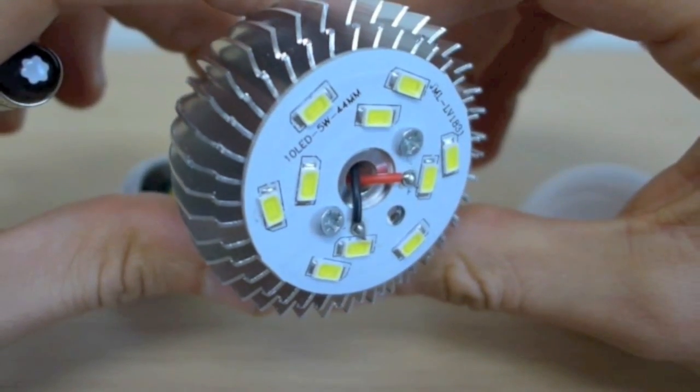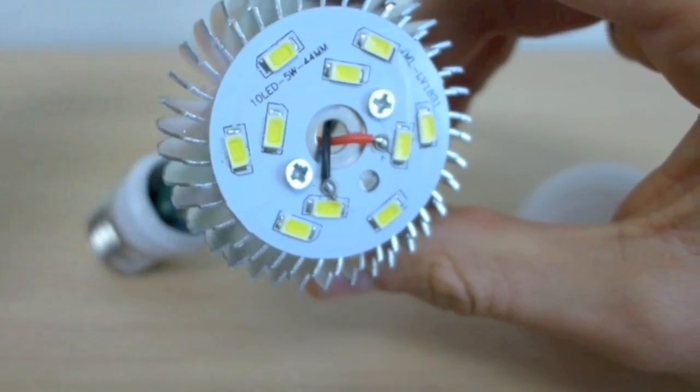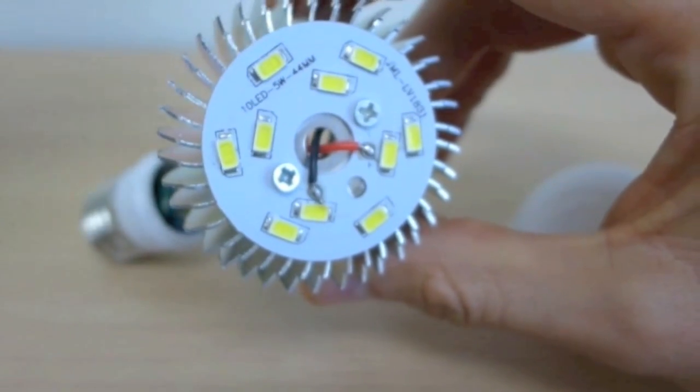The LED chip is the star of the show. Some LED bulbs of this type will use only one high-powered LED chip to generate all the light it needs, and some like this one will use multiple smaller chips.